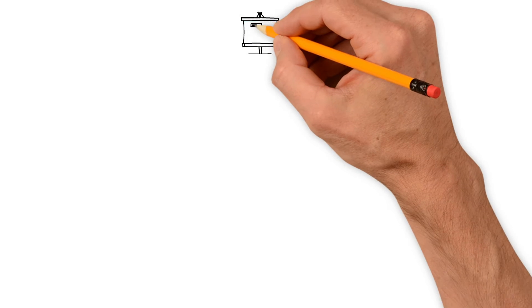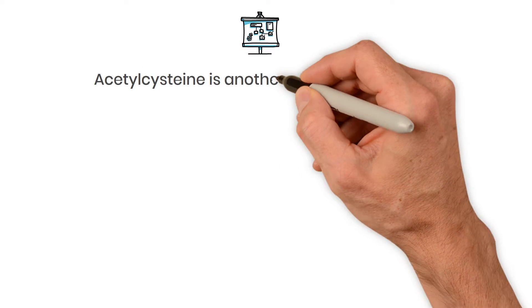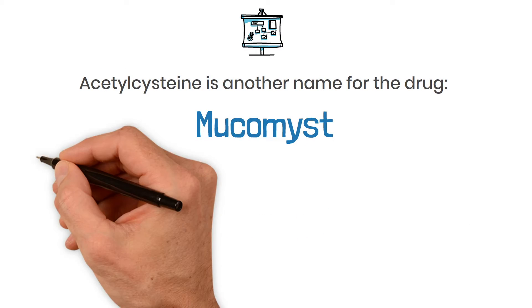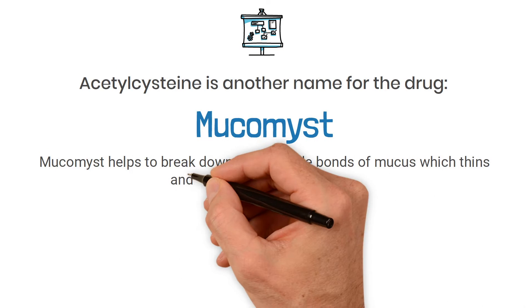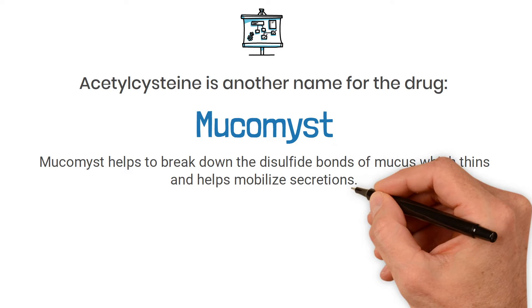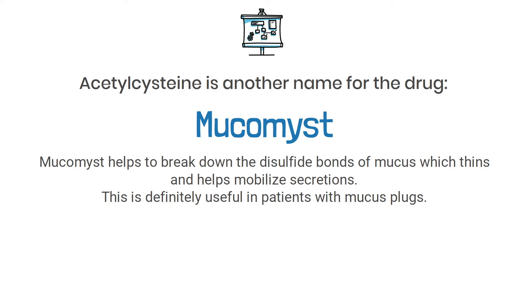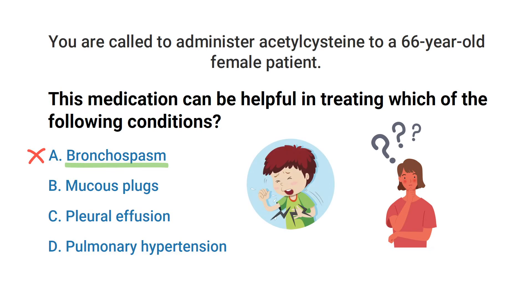To get this one right, you simply needed to know that acetylcysteine is another name for the drug Mucomist. Mucomist helps to break down the disulfide bonds of mucus, which thins and helps mobilize secretions — this is definitely useful in patients with mucus plugs. Mucomist is not used to treat bronchospasm, so we can rule that out right away; in fact, it can actually make the patient's bronchoconstriction worse.